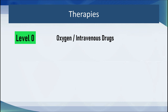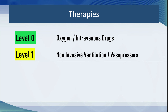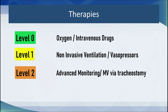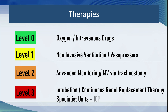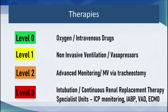In terms of therapies: level zero provides oxygen and intravenous drugs; level one adds non-invasive ventilation such as CPAP and some vasopressor drugs. Level two high dependency units offer advanced monitoring such as arterial lines and central venous catheters, and patients may receive mechanical ventilation via tracheostomy. Level three is where the complex interventions occur — intubation and mechanical ventilation, continuous kidney replacement therapy, intracranial pressure monitoring, intra-aortic balloon counterpulsation, ventricular assist devices, and ECMO, which may only be available in one hospital per region or country.